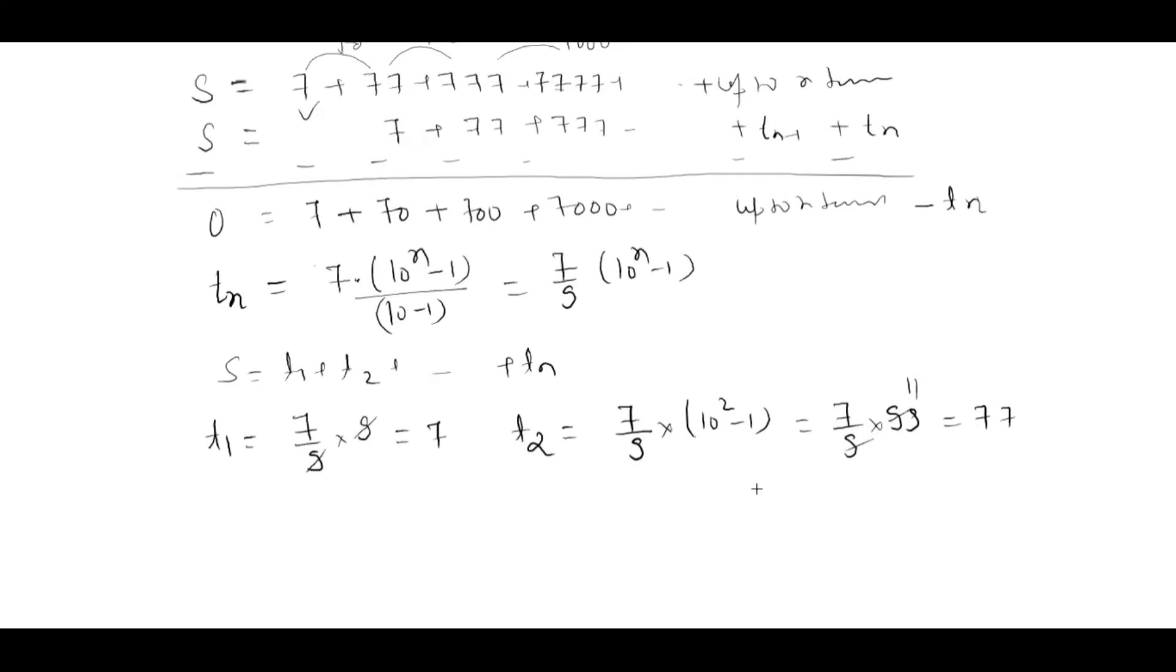We got that this is fine, so we can say that summation is nothing but sigma of t_n varying from 1 to n. We write this as sigma 7 by 9 times 10 to the power n minus 1, n equals 1 to n. The constants come out, so this is 7 by 9, and this becomes sigma 10 to the power n minus 1.